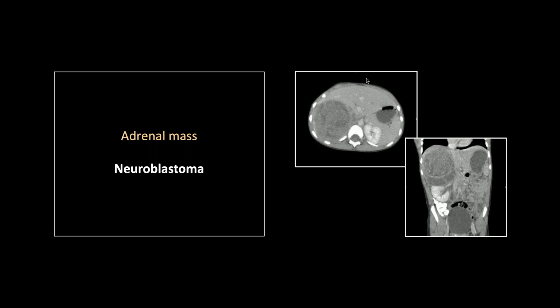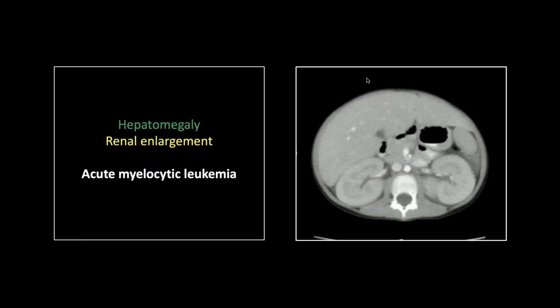Very good collection there of right upper quadrant tumors. One more pediatric case — this doesn't have to be a pediatric entity but this was a pediatric patient with acute myelocytic leukemia, AML. That's the one that can present with infiltration of different organs. I've seen this affect the lungs and the liver, and in this case the liver is enlarged, but the kidneys — look at these kidneys. The cortex is far too thick, the columns of Bertin are far too thick, and you can even see wisps of density within the pyramids suggesting infiltration.